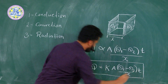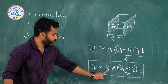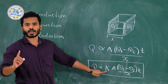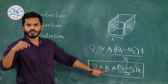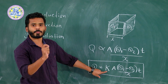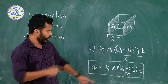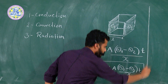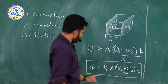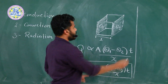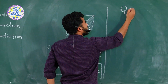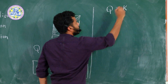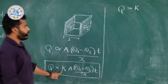Here k is called the coefficient of thermal conductivity. This coefficient depends on the material — for different materials, the coefficient of thermal conductivity is different. Q is equal to k when the area of cross section is equal to 1 centimeter square.